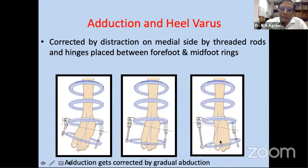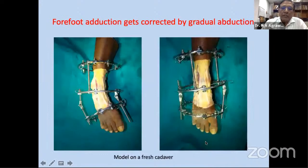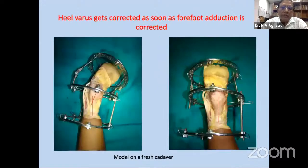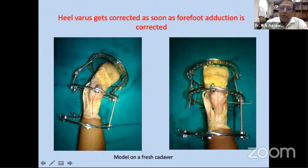When pronation deformity is corrected, we proceed with flexion-distraction on the medial side using a threaded hinge placed between forefoot and midfoot to gradually correct adduction deformity. This is demonstrated in a fresh cadaver model — as adduction deformity is corrected, varus deformity is automatically corrected simultaneously.